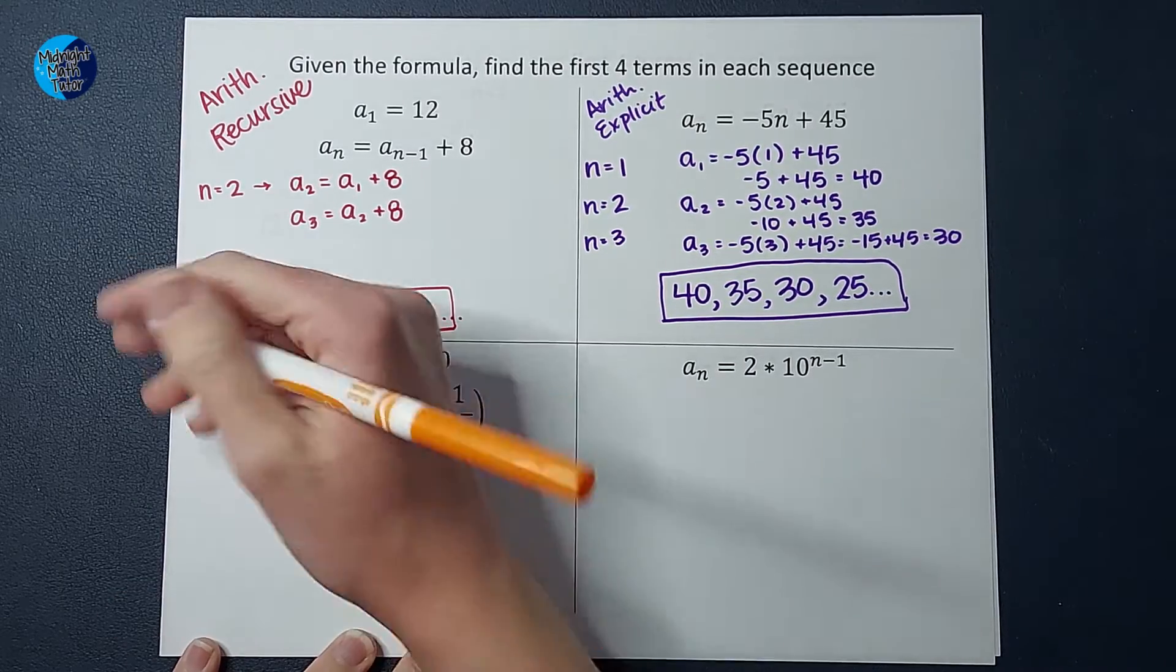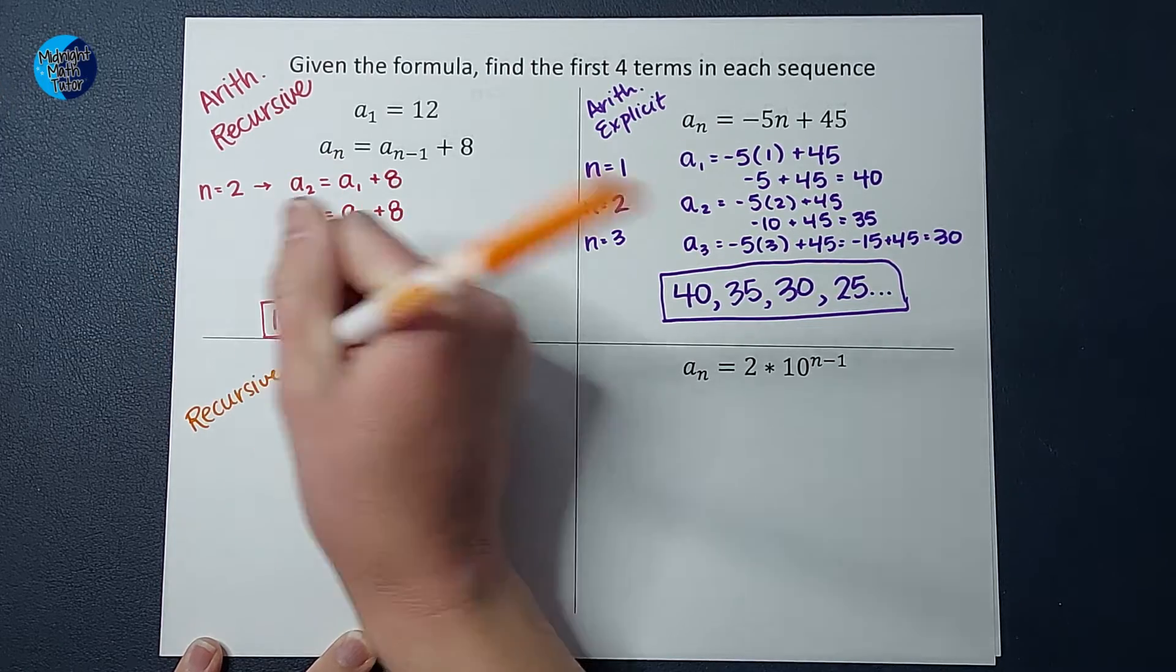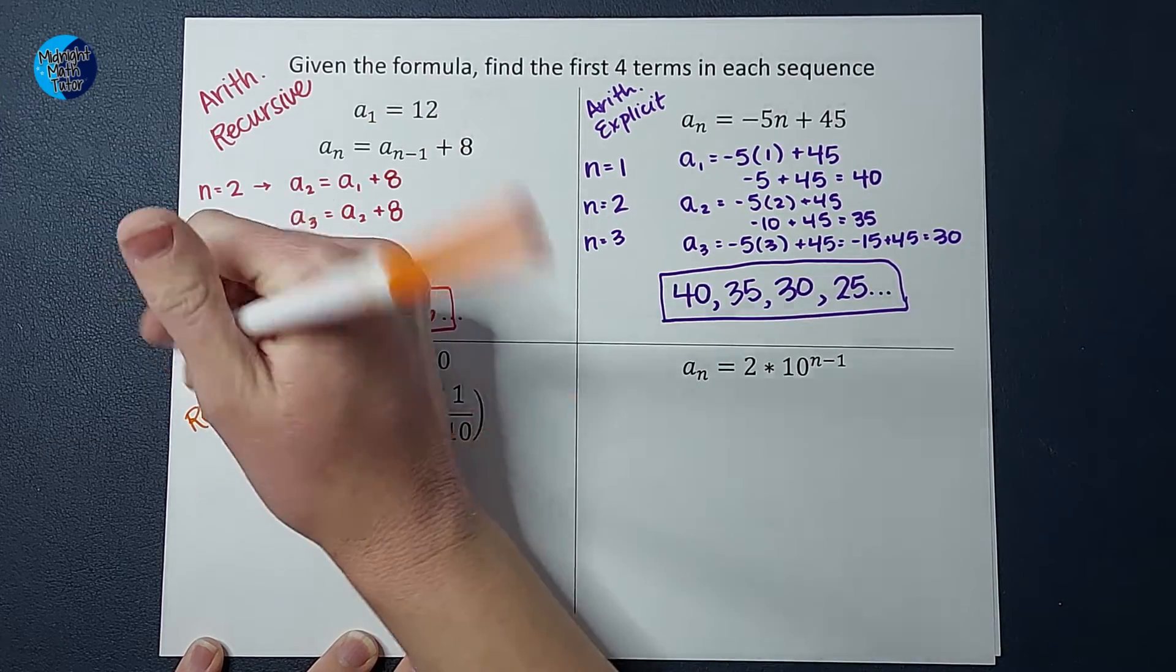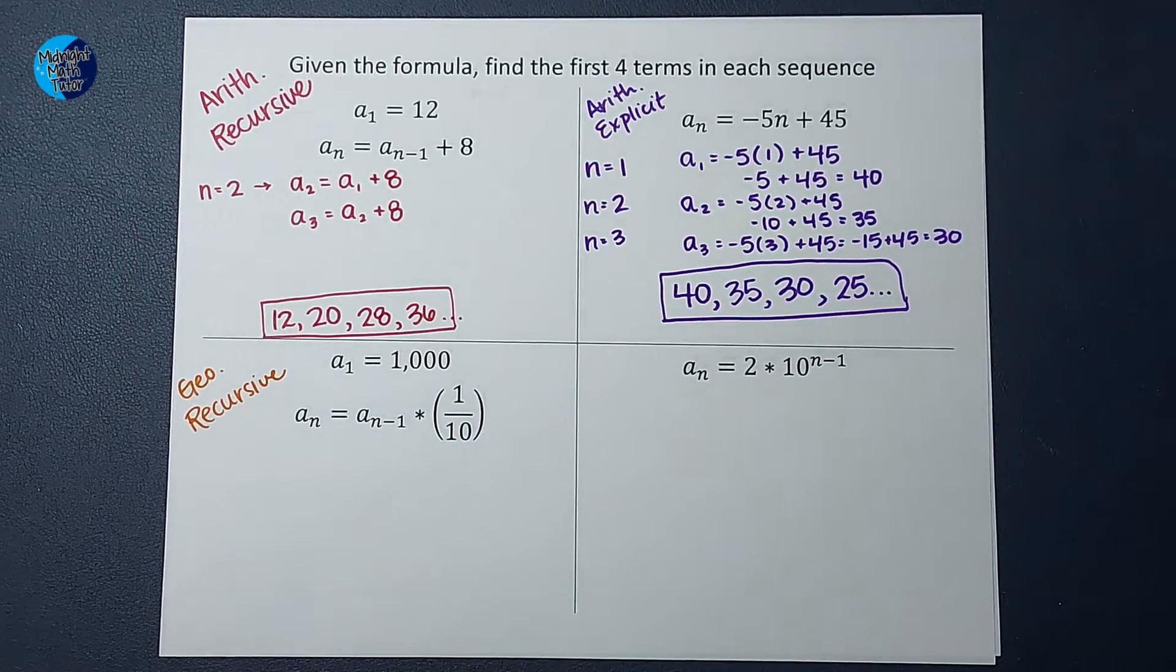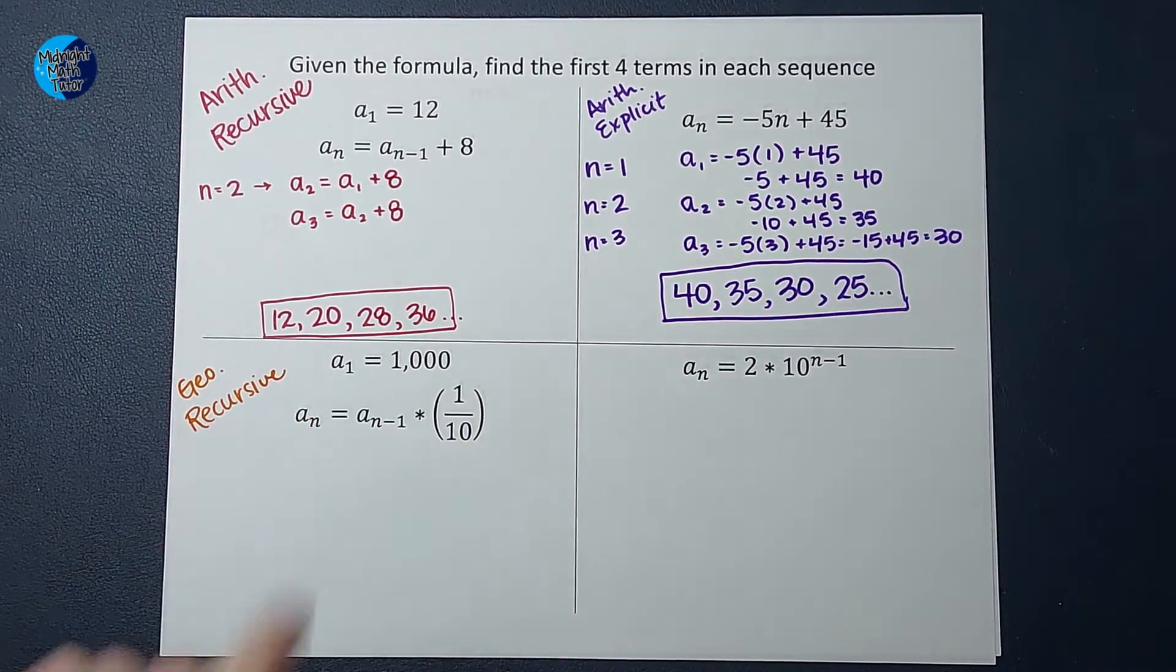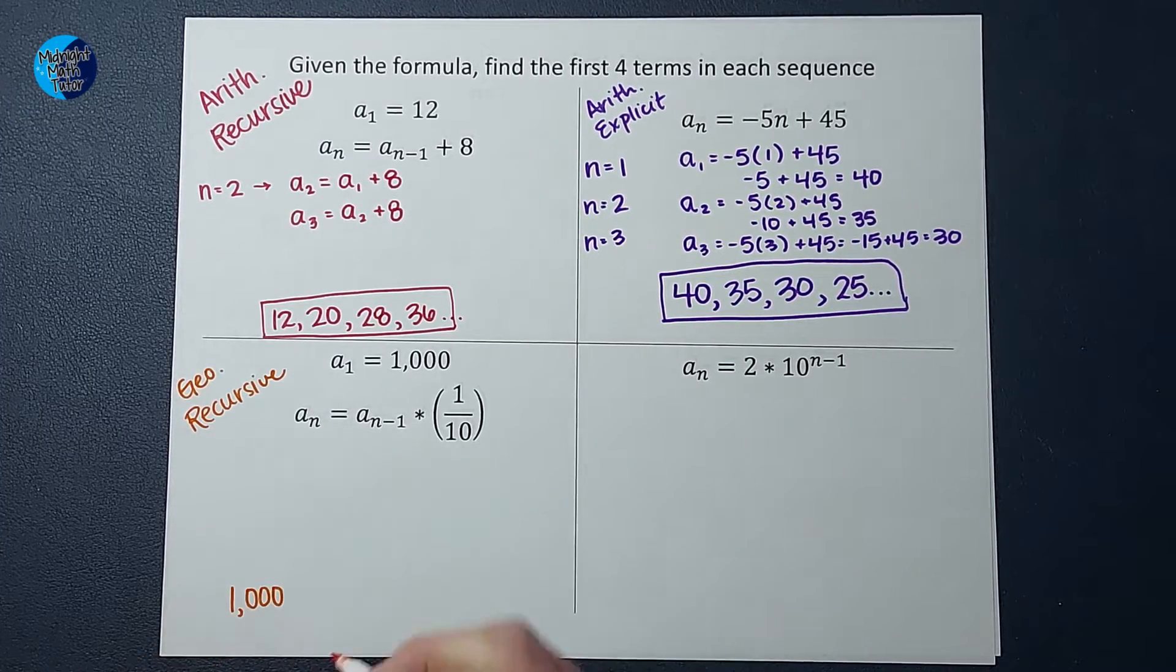All right, here we have, again, this is recursive. And it is looking pretty geometric to me, with that times one-tenth there. So this is a geometric recursive. I already know my first term is 1,000. A sub 1 is 1,000.